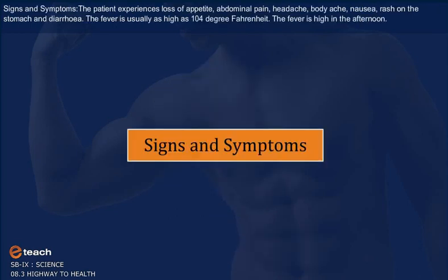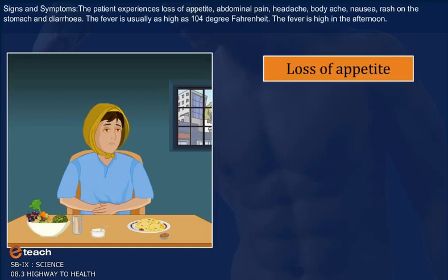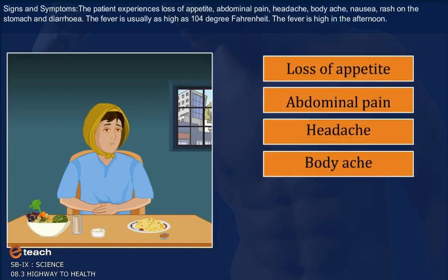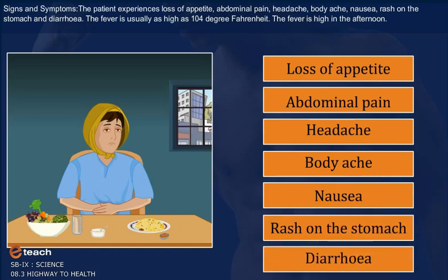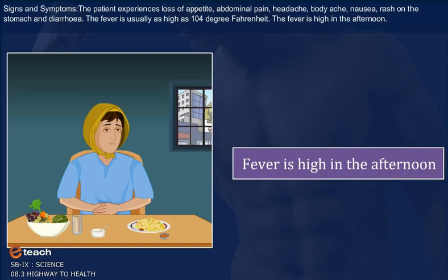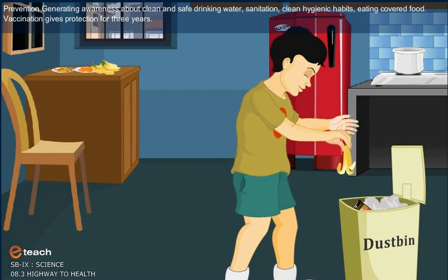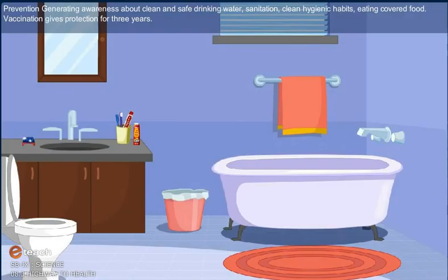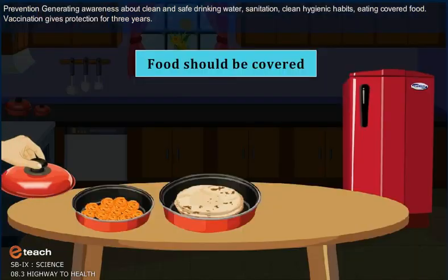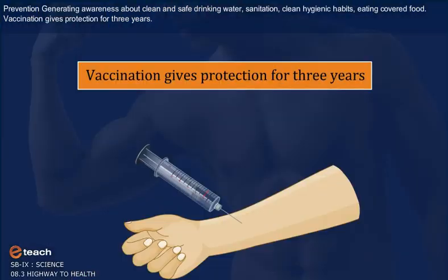Signs and Symptoms: The patient experiences loss of appetite, abdominal pain, headache, body ache, nausea, rash on the stomach and diarrhea. The fever is usually as high as 104 degrees Fahrenheit and is high in the afternoon. Prevention: Generating awareness about clean and safe drinking water, sanitation, clean hygienic habits, eating covered food. Vaccination gives protection for 3 years.